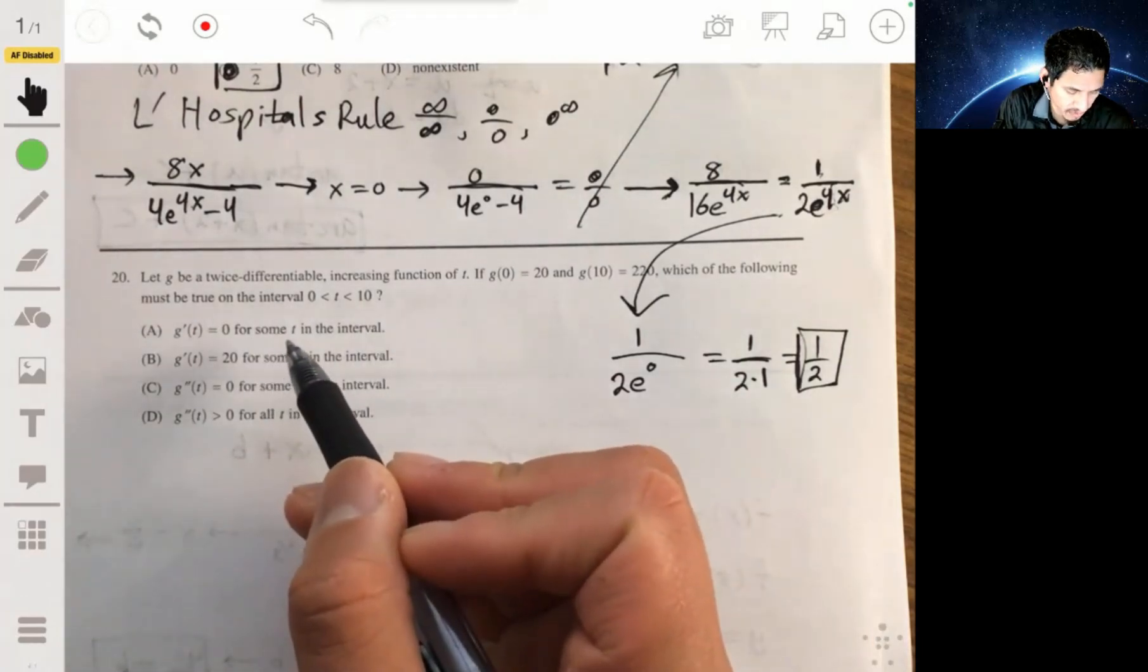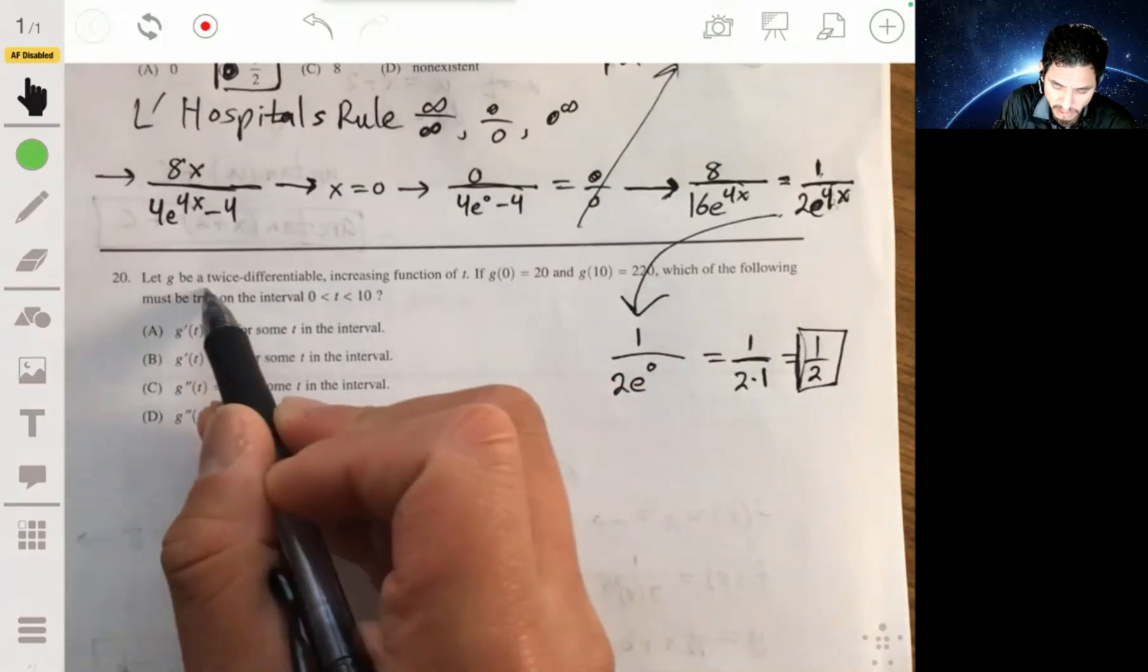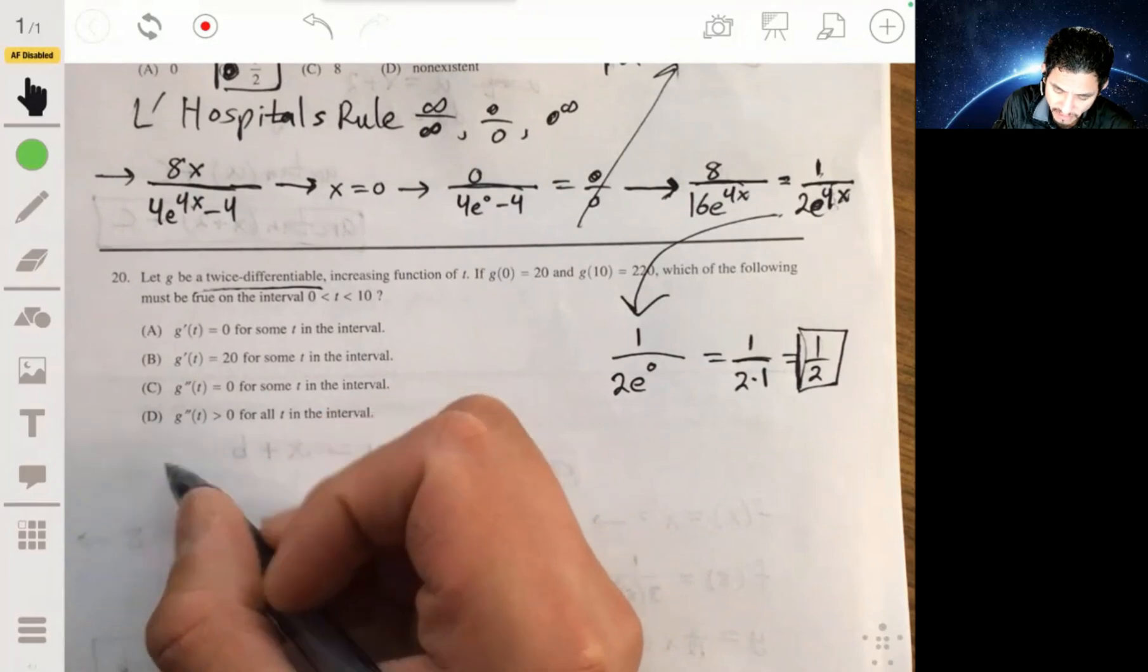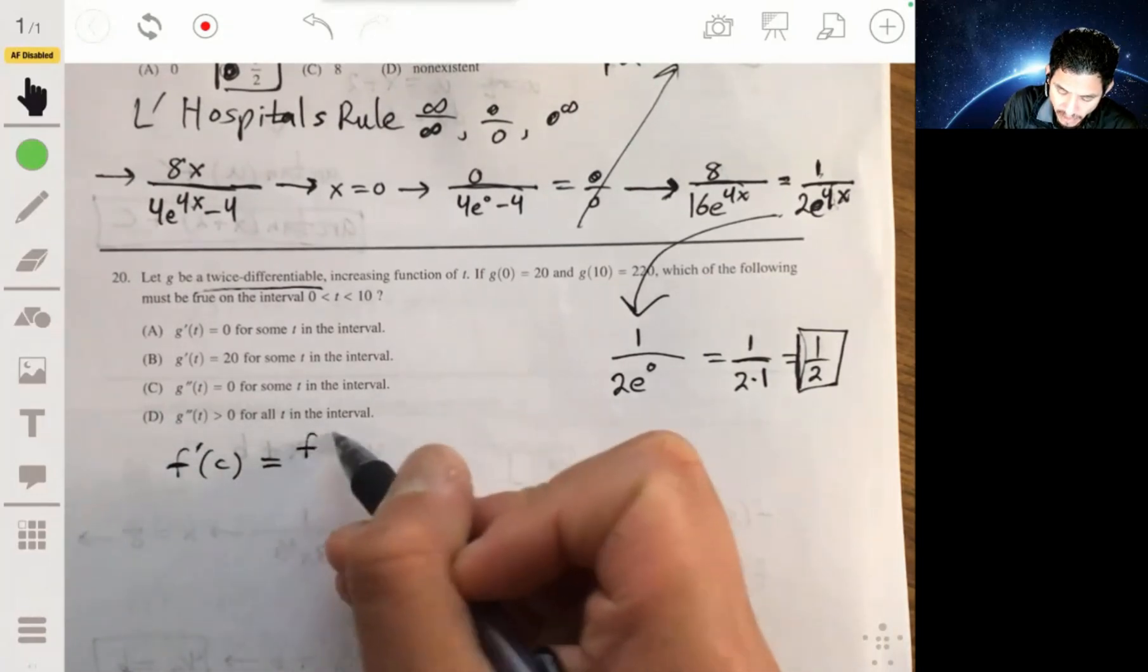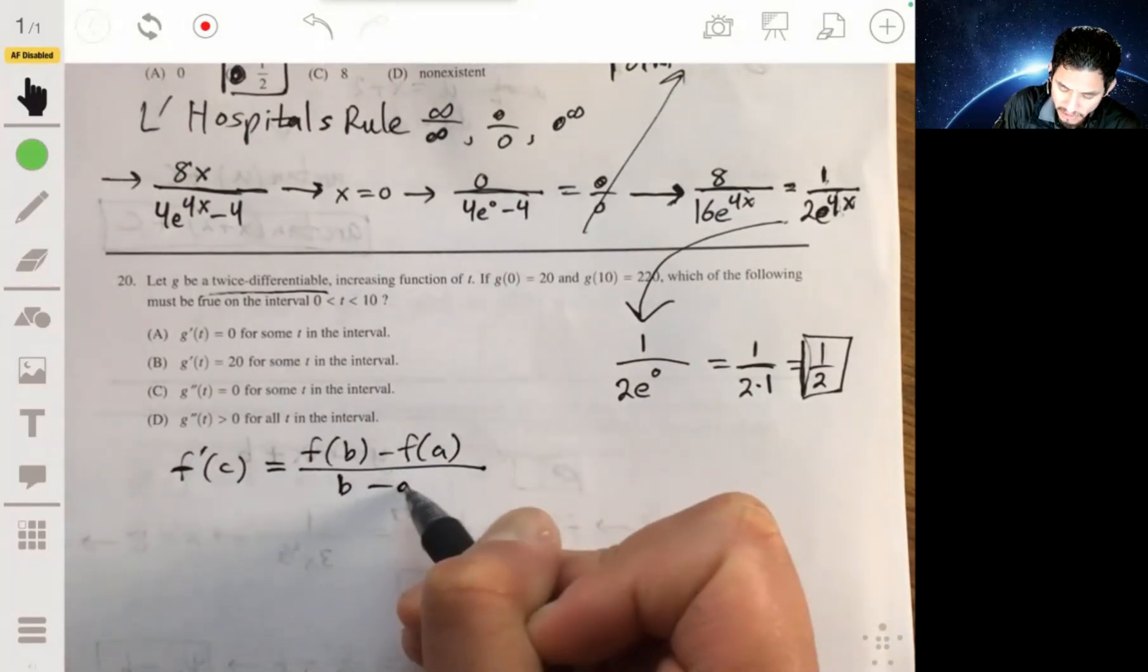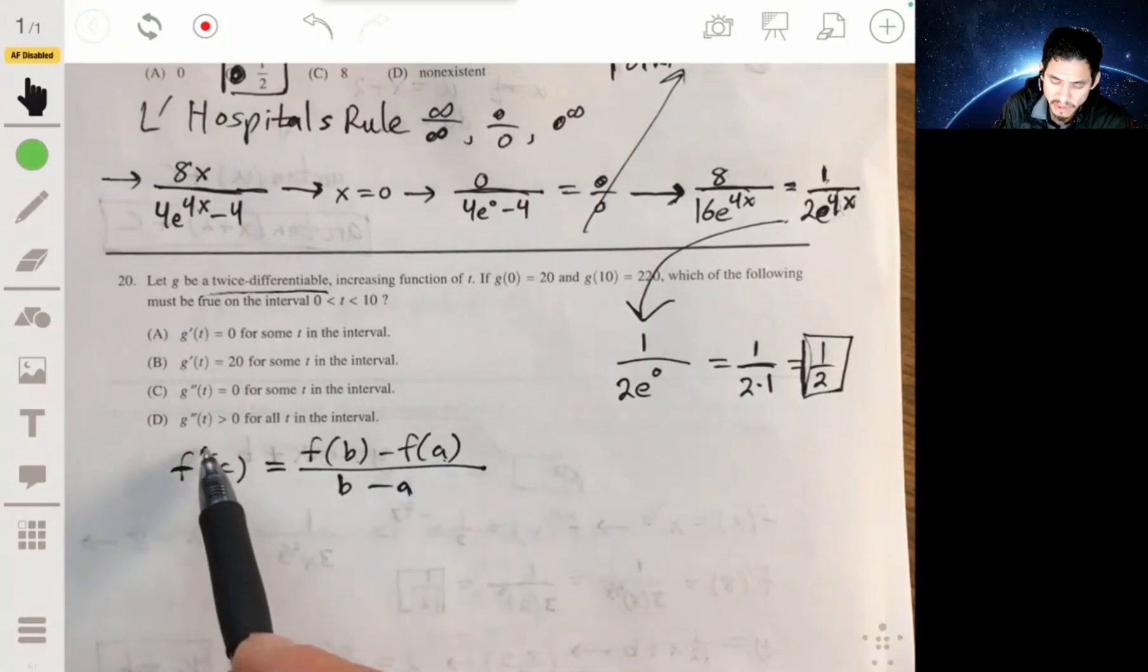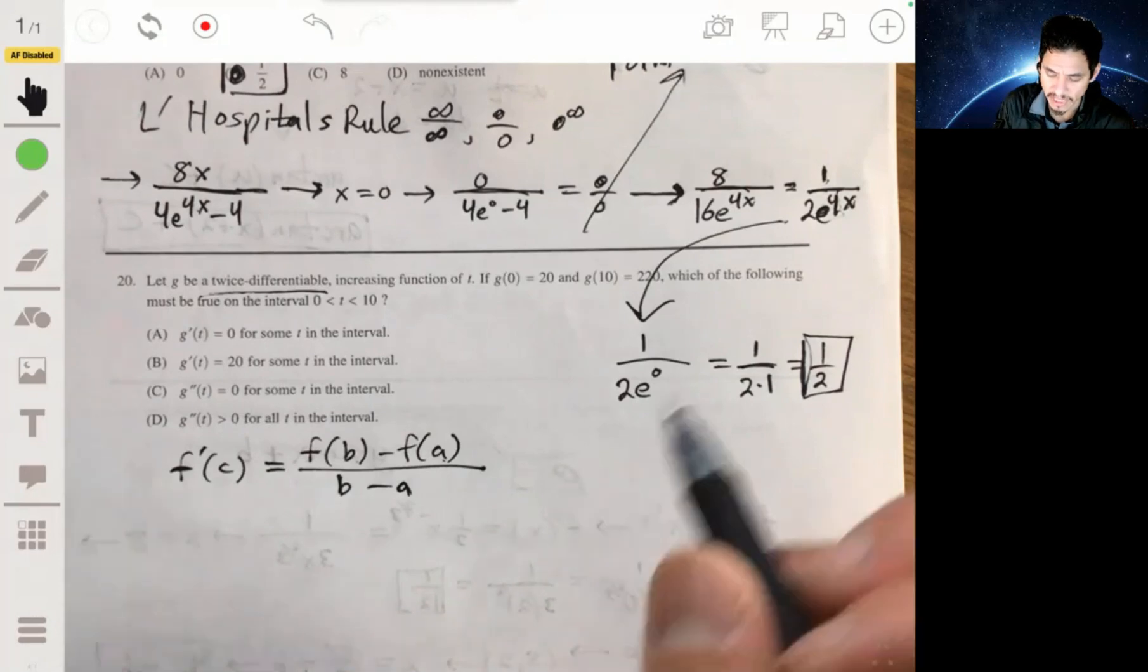In this case, what they're actually looking for is the mean value theorem. You're given an interval and you're told it's increasing and it's twice-differentiable. So as we know, it's continuous and the derivative exists. So then what they're essentially looking for is that, remember, the mean value theorem says that for some value, f prime of c will equal f of b minus f of a over the interval, over b minus a. So for an interval from a to b, we can find that the slope connecting the endpoints will be equal to the derivative of some point within there.